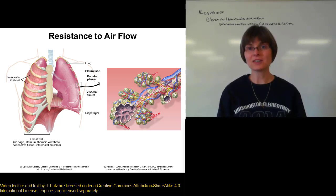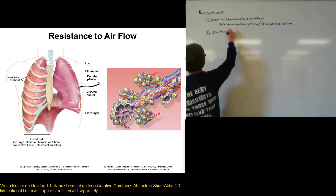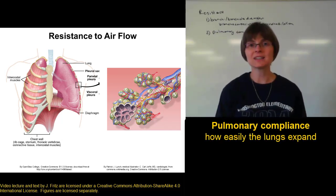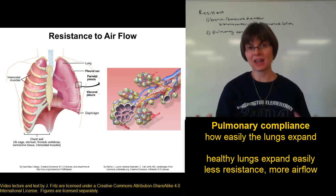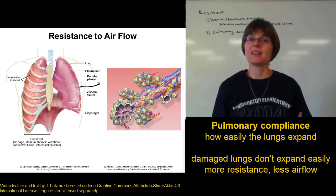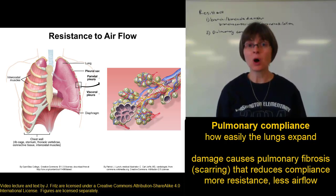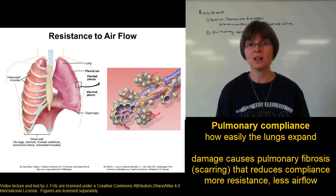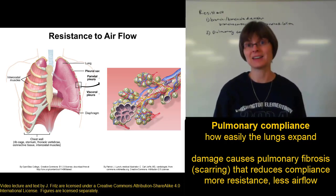A second factor affecting resistance to air flow is pulmonary compliance — how easily your lungs expand. If your lungs expand easily, there's not much resistance and you'll have higher air flow. If your lungs don't expand well, you'll have higher resistance and less air flow. Anything that damages the lungs can lead to pulmonary fibrosis, which is scarring in the lung tissue that makes it stiffer. Any damage to lung tissue will reduce compliance, causing more resistance and less air flow.